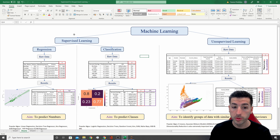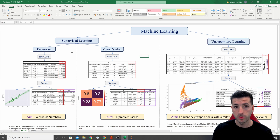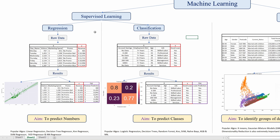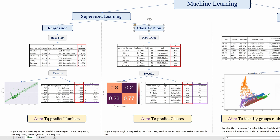Going back to supervised machine learning to give you some examples. Under supervised machine learning we have regression and classification. The difference between regression and classification is that one is trying to predict a number and the other one is trying to predict a class.